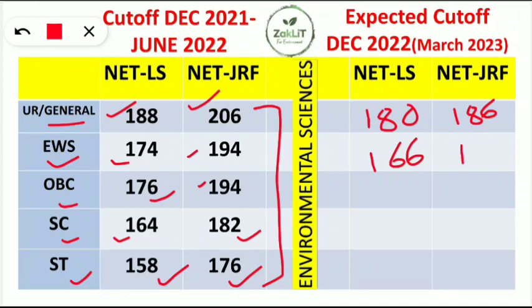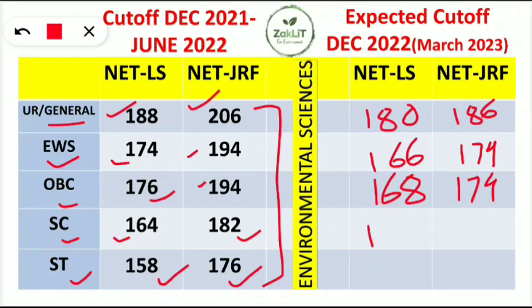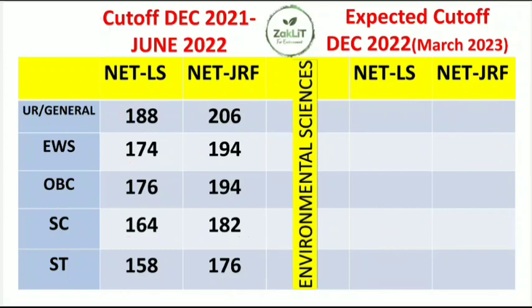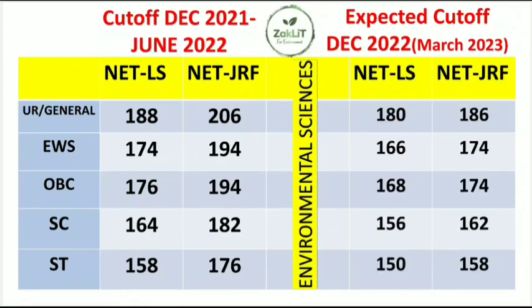We are hoping for that dip. The expected NET JRF cut-off for EWS is 174. For OBC, NET LS is expected at 168 and NET JRF at 174, same as EWS. For SC category, NET LS cut-off may go to 156 or above and NET JRF 162 or above. For ST candidates, the cut-off may go to 150 plus for NET LS and 158 plus for JRF. This prediction was made after analyzing the paper response sheets.